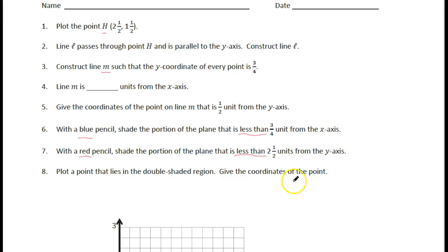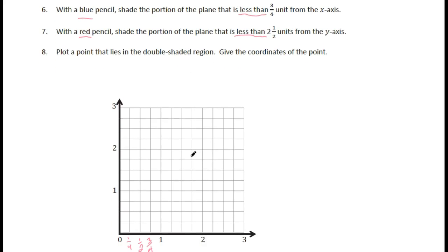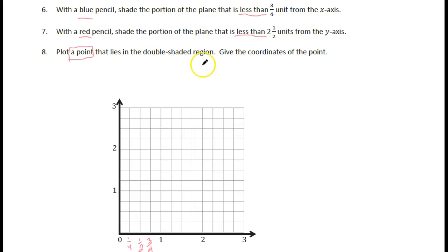Think about whether you're measuring from the X axis at the bottom or from the Y axis on the side. Then plot a point that lies in the double-shaded region — where both colors overlap. It could be any point in that region where you've got both colors, you get to pick it, and then give the coordinates of that point. Alright, good luck, see you tomorrow.